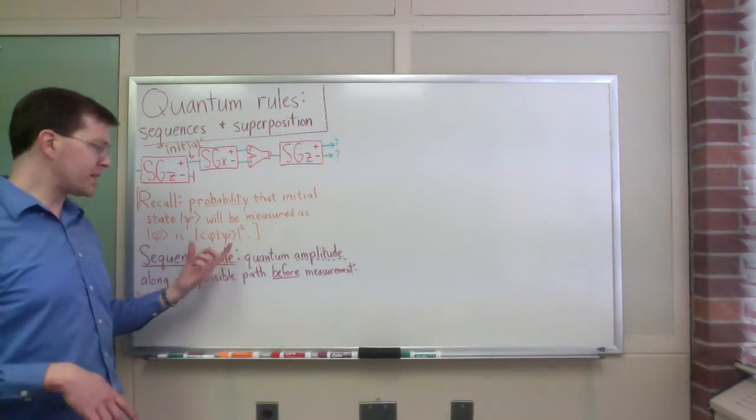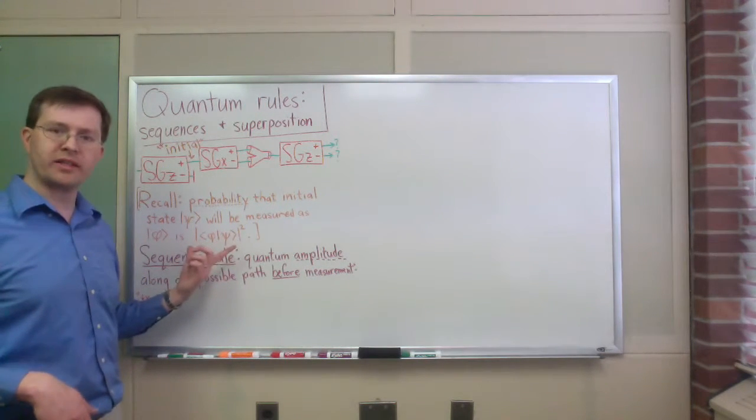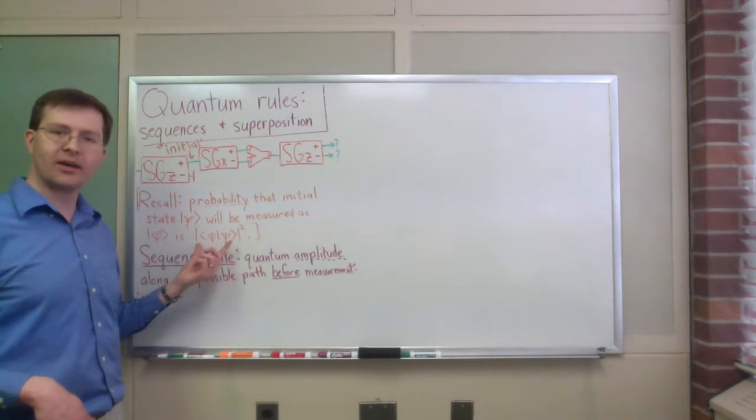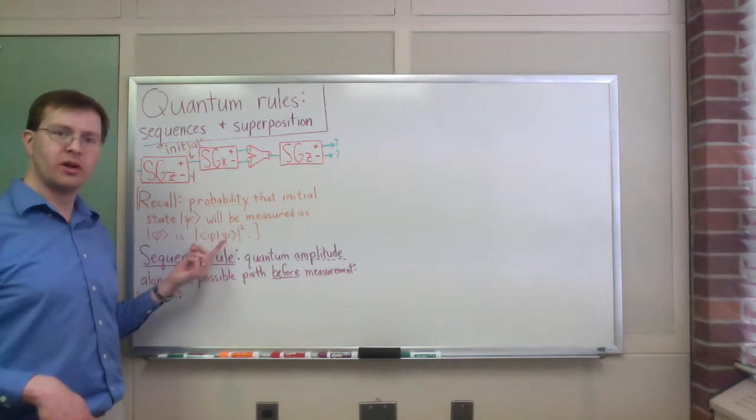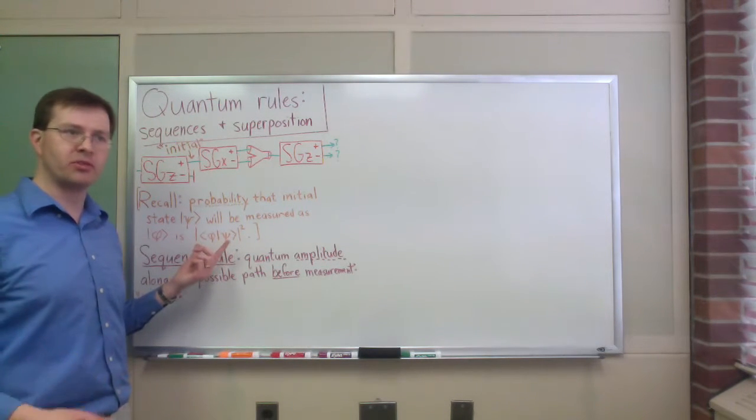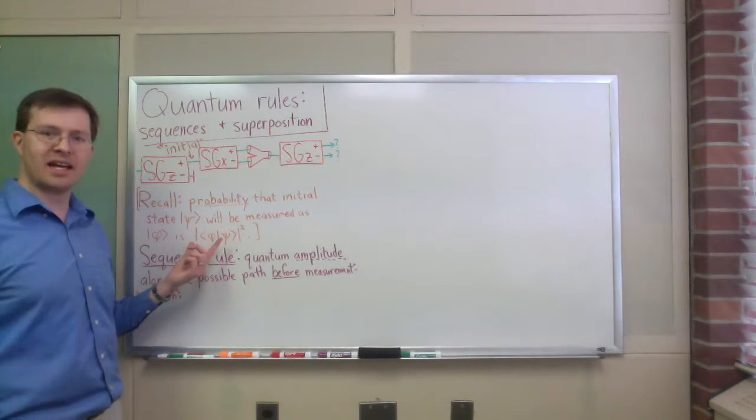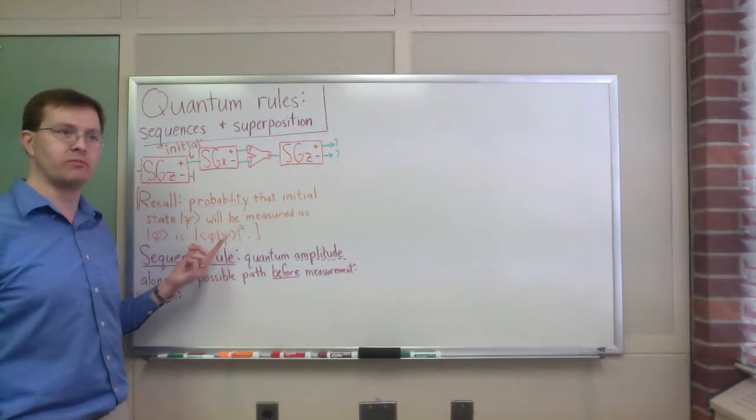For us, we want to hold off on doing that absolute square at the end, because that's really the measurement step. I want to build this thing in the middle. The bracket there is the quantum amplitude for that measurement, which is sort of the probability amplitude. It's sort of the square root of a probability. The key thing is that has the potential to be negative or imaginary or whatever complex phase it might be.